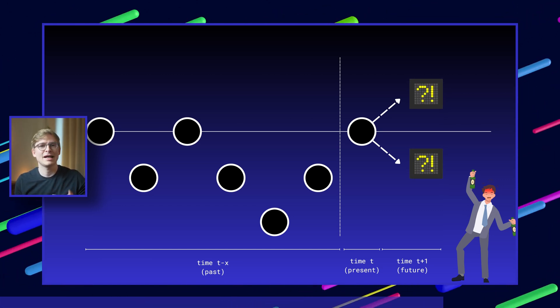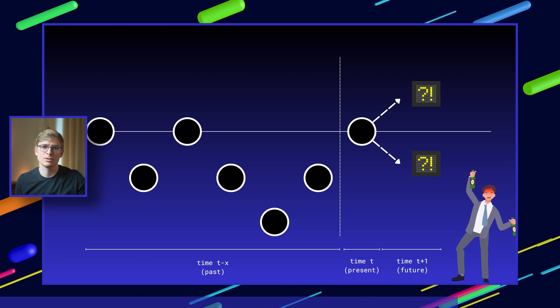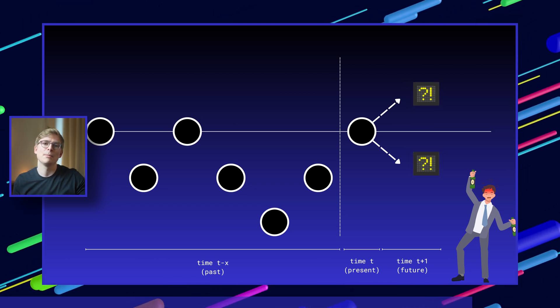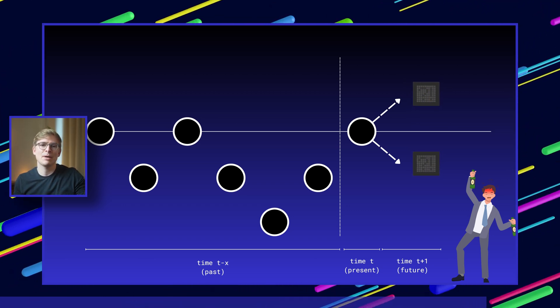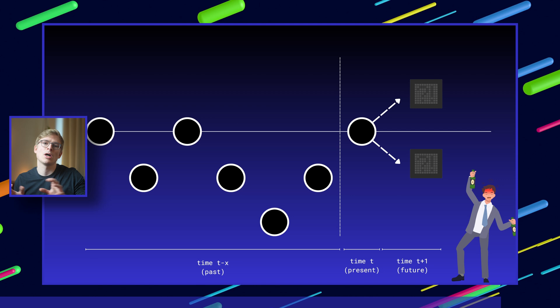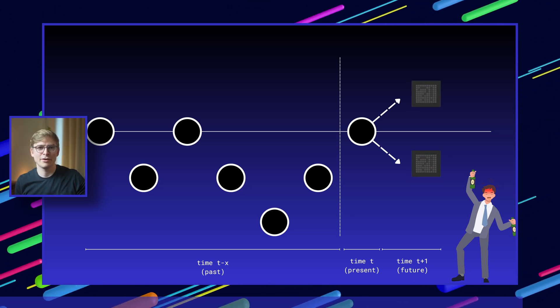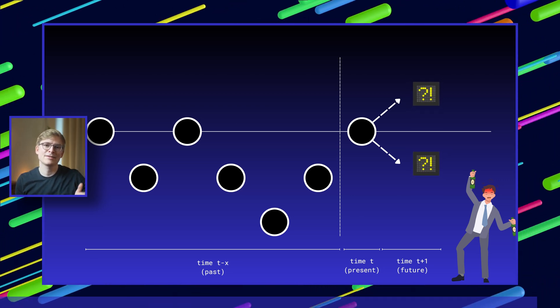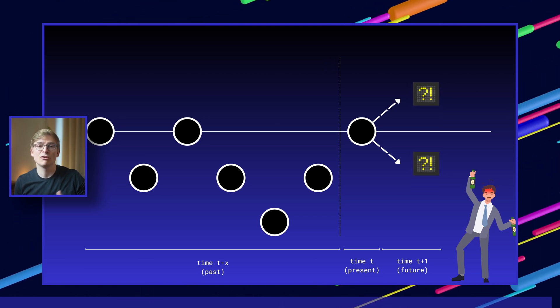So just like the drunken person's next steps depend only on their current position, Markov models work in a similar way. Future states depend only on the present, not on how they arrive there. But what if we take it a bit further? What happens if we relax the assumption of the memoryless property of Markov models?